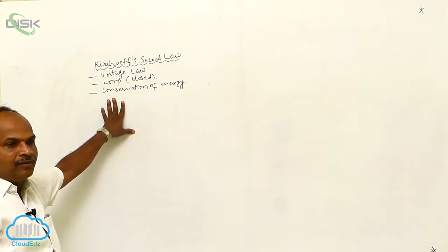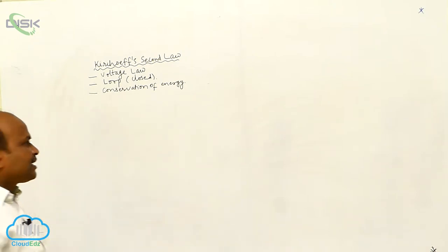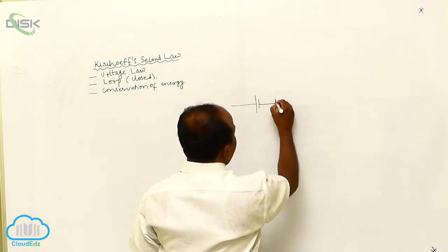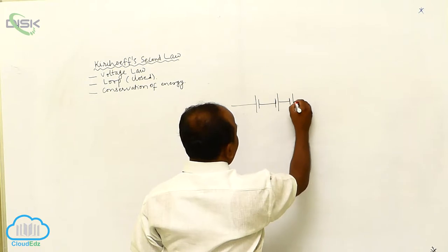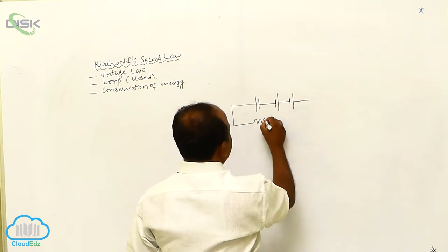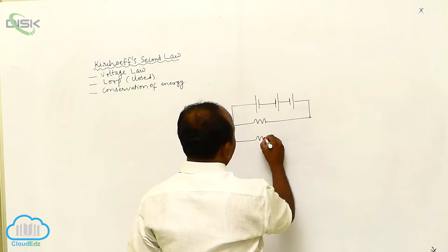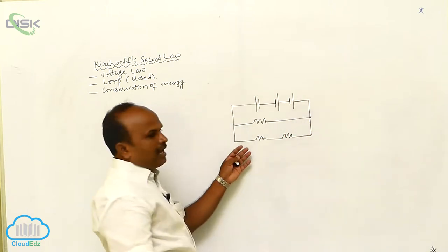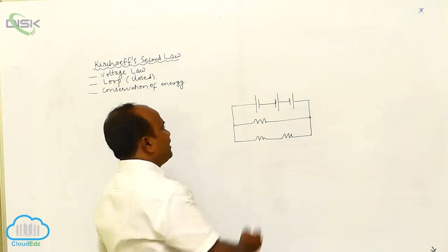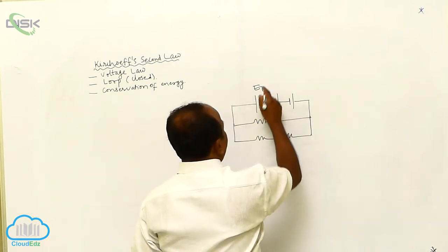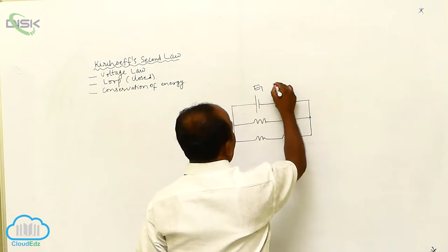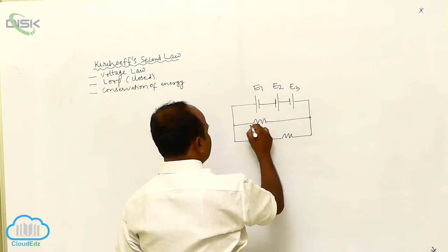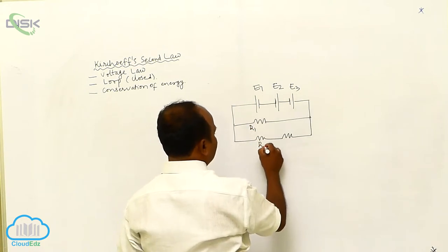Now suppose, let us consider this is a cell and these are the resistors. This is a complex electrical circuit. The EMF of the cell is given, and the resistors are R1, R2, and R3.